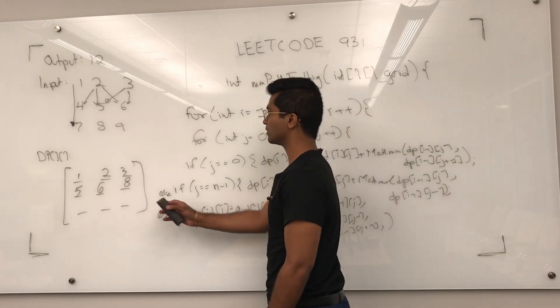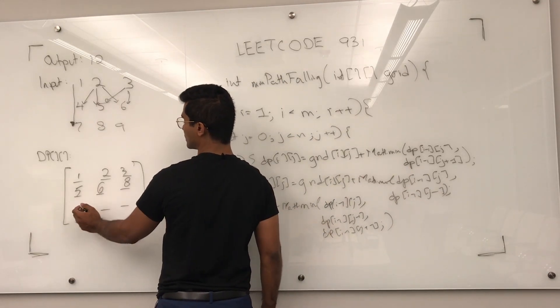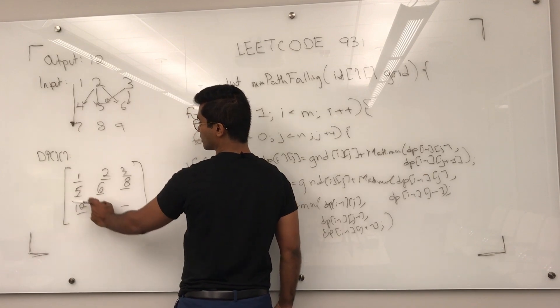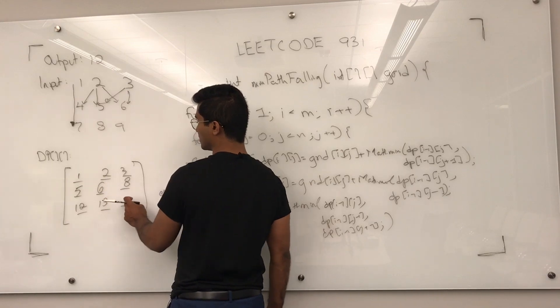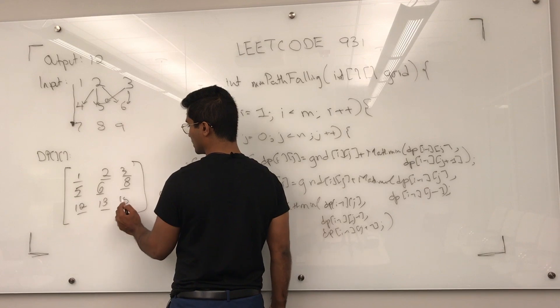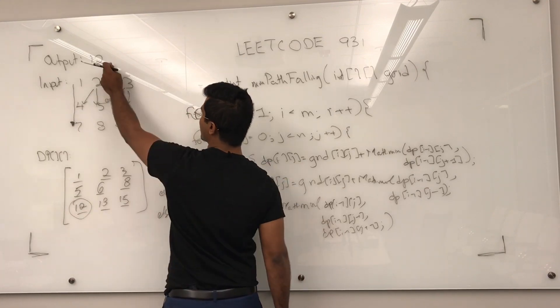So, now once everything is filled out, 7 is going to be 7 plus 5 or 7 plus 6 is going to be 12. 8 is going to be either 8 plus 5 or 8 plus 6 or 8 plus 8, 8 plus 5. And then 9 is going to become either 9 plus 6 or 9 plus 8, 9 plus 6 is 15. And then we're going to return 12 because it's the lowest number on the bottom row, which is the output.